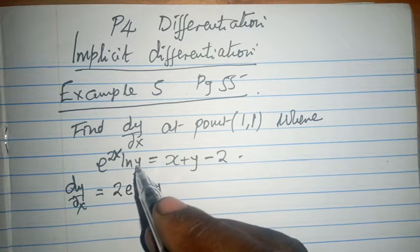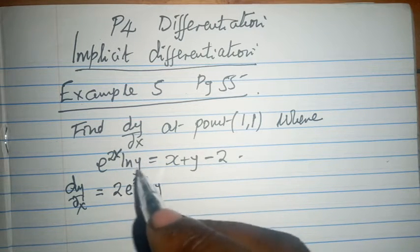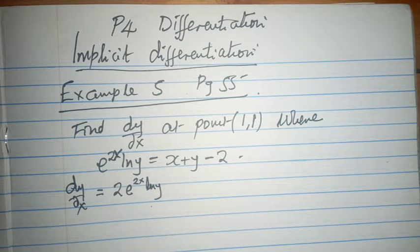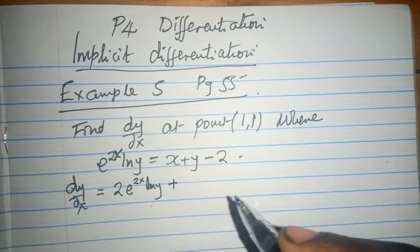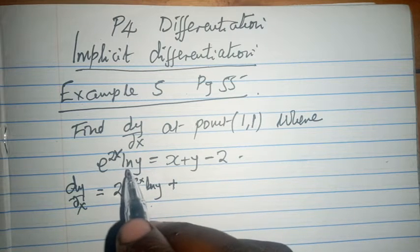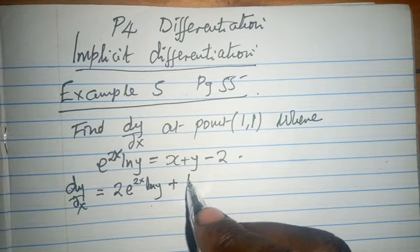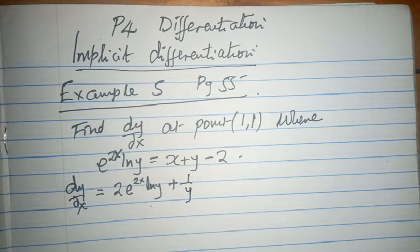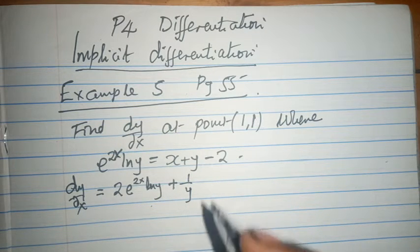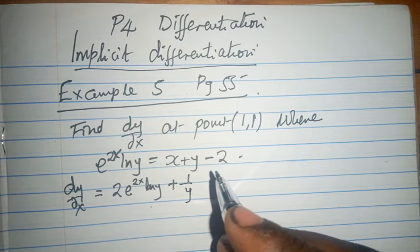If we want to differentiate the term that is carrying y with respect to x, we are going to have plus the differential of ln y which is 1 over y, and everything else becomes a coefficient.